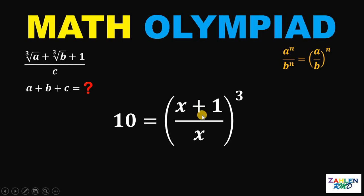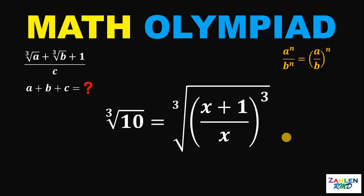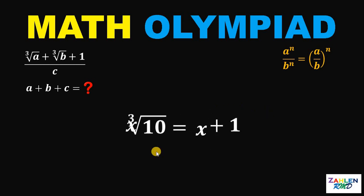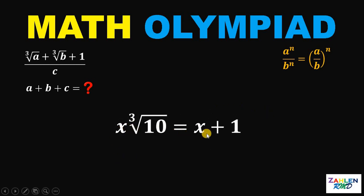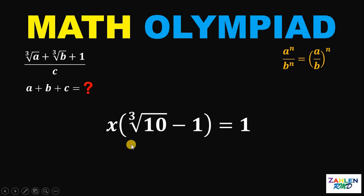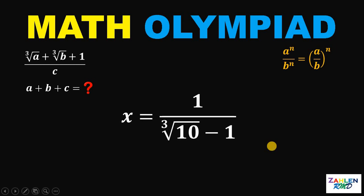Now let's solve for x, since we know this equation has only one real root. Taking the cube root of both sides, cube root of x plus 1 over x raised to 3 is just x plus 1 over x. Multiplying both sides by x gives us x times cube root of 10 equals x plus 1. Subtracting x and factoring gives x times the quantity cube root of 10 minus 1 equals 1. Dividing both sides by cube root of 10 minus 1, x equals 1 over cube root of 10 minus 1.